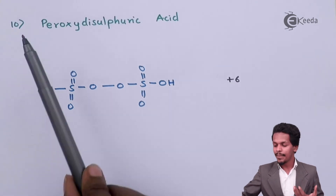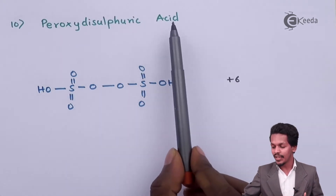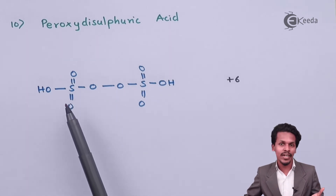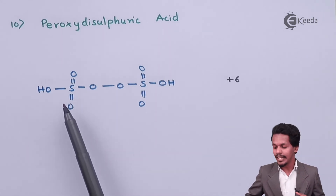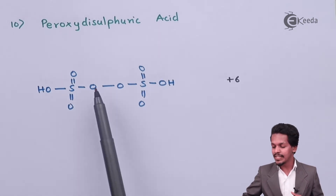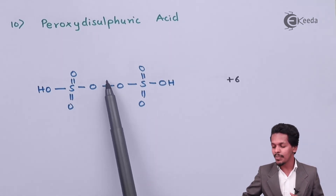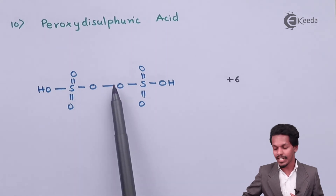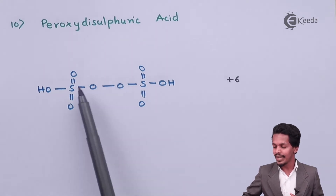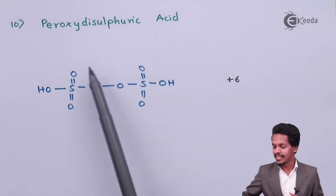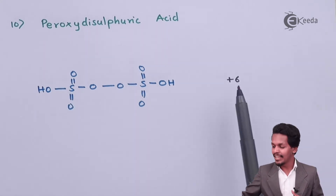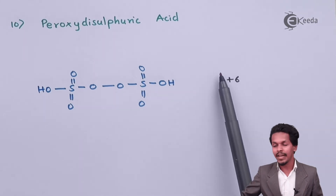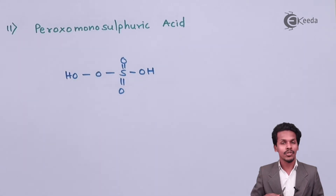Next is peroxydisulfuric acid. It is very similar to the previous one, with the only difference being that instead of one bridging oxygen atom, there are two oxygen atoms connecting the groups. The oxidation state of sulfur is again plus 6.